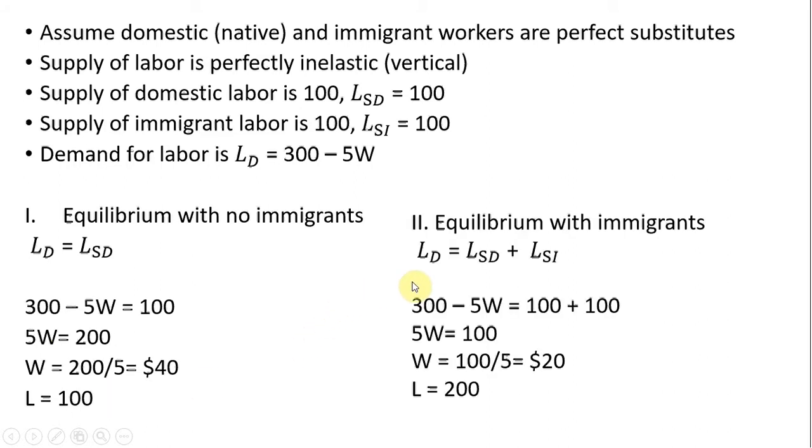Moving on to the situation with immigrants. So the immigrant equilibrium will occur where the quantity of labor demanded equals the quantity of labor supplied. The only thing different here is on the right-hand side, we're going to have 200. Okay, so the supply of labor is perfectly inelastic at 200. Subtracting this 200 from both sides and then dividing through by 5, the equilibrium wage is lower. It is now $20, and there are 200 people employed: 100 domestic workers and 100 immigrant workers.